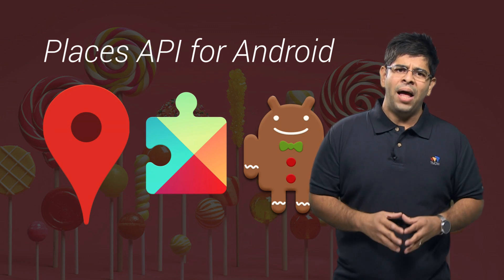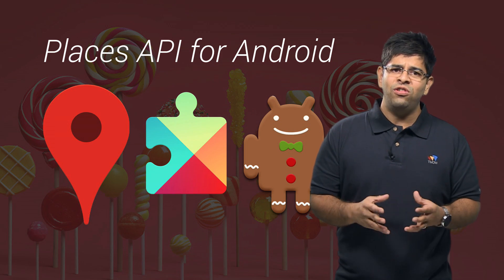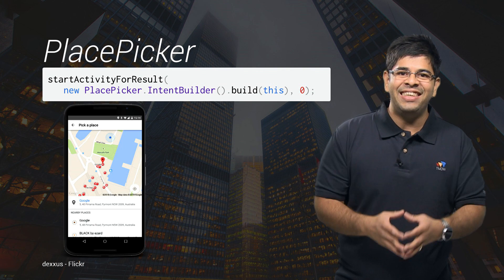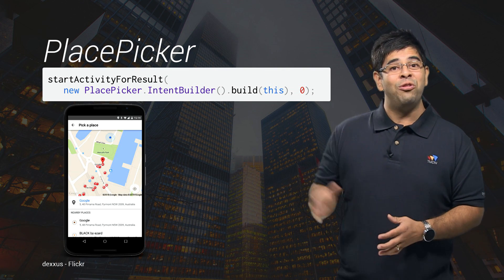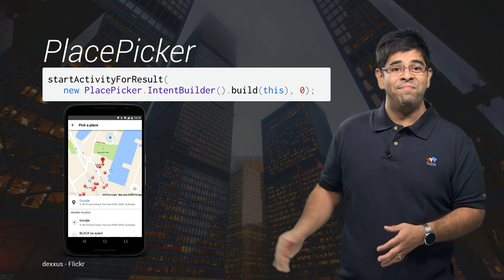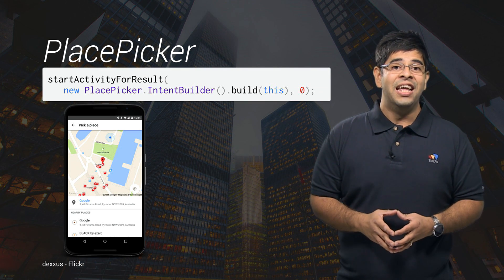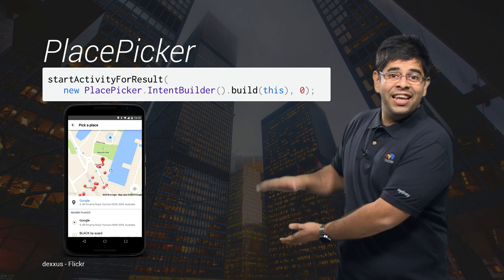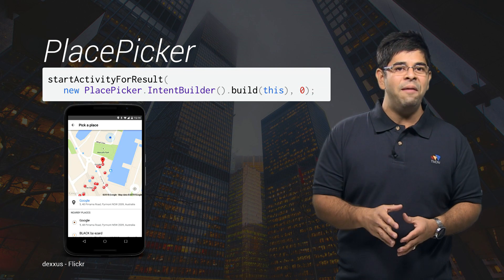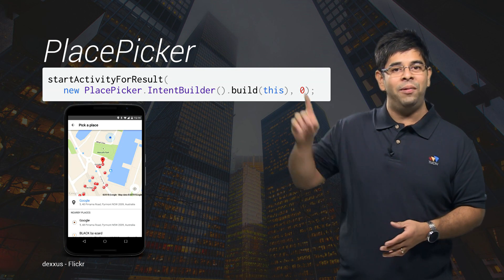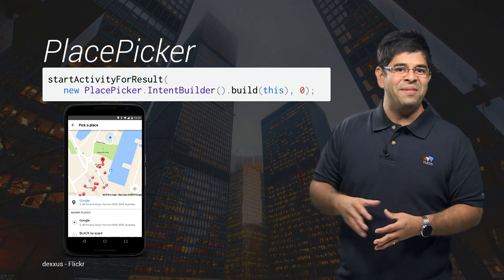Perhaps the most common question users want to answer is: where am I? The Places API makes it easy for you to give them that answer through the place picker. This is a ready-to-use widget that displays a list of nearby places, and using it is as simple as calling the place picker to be displayed.